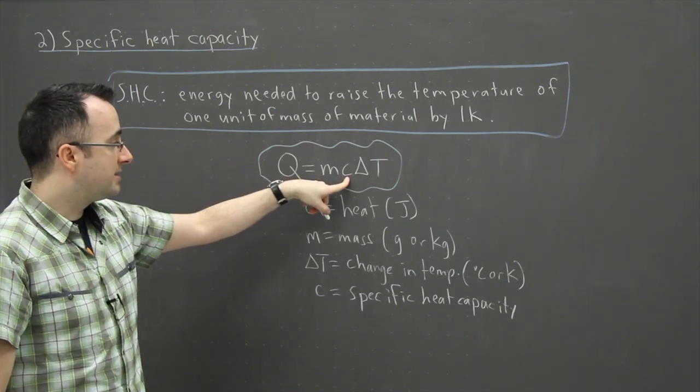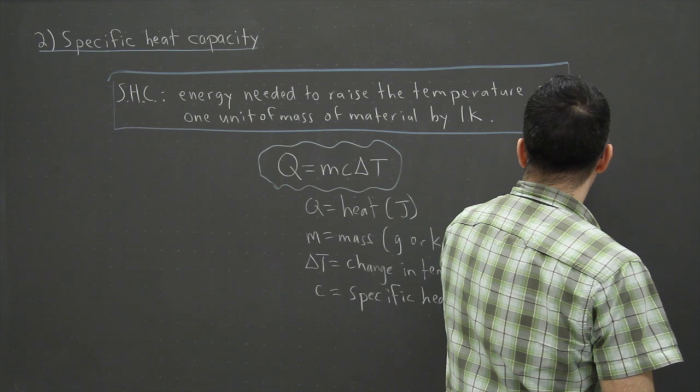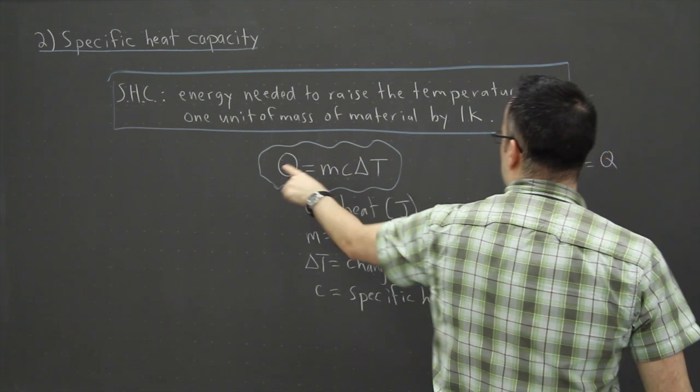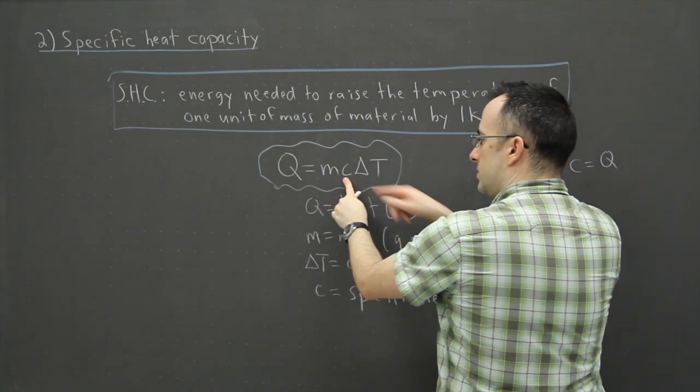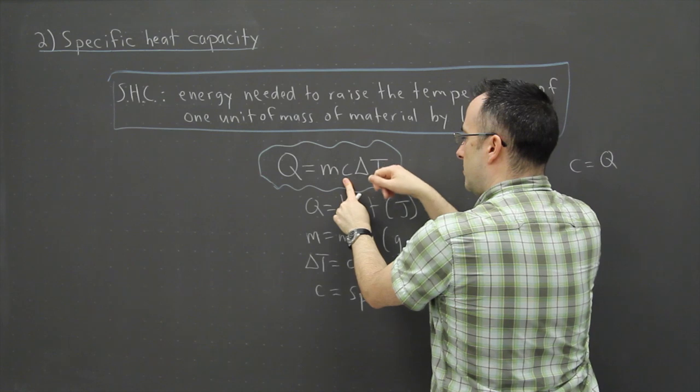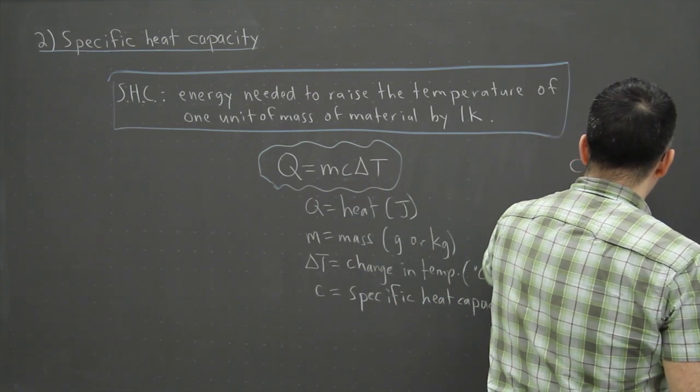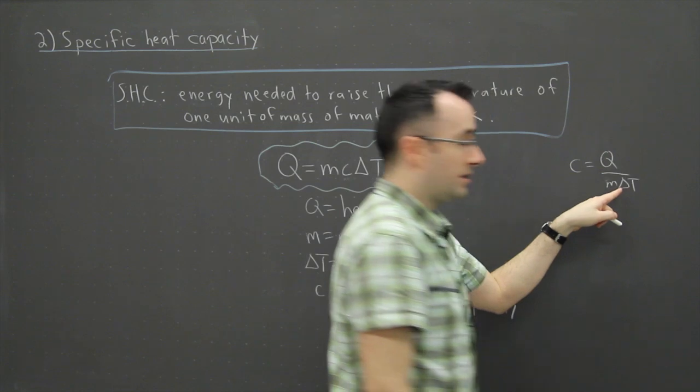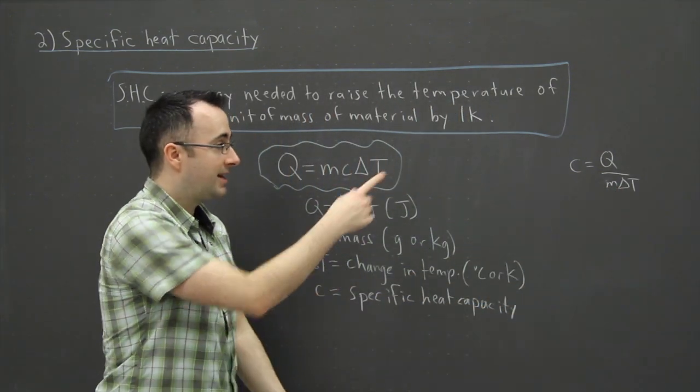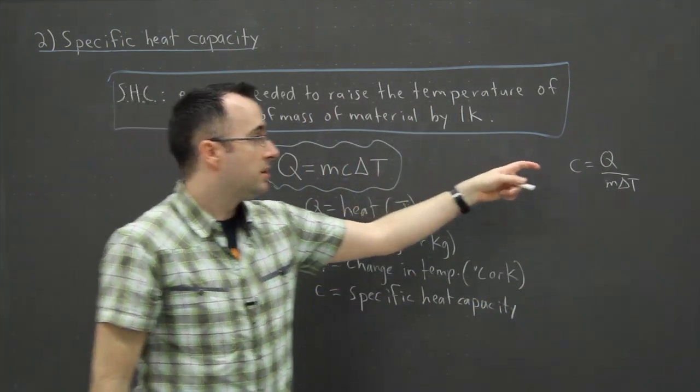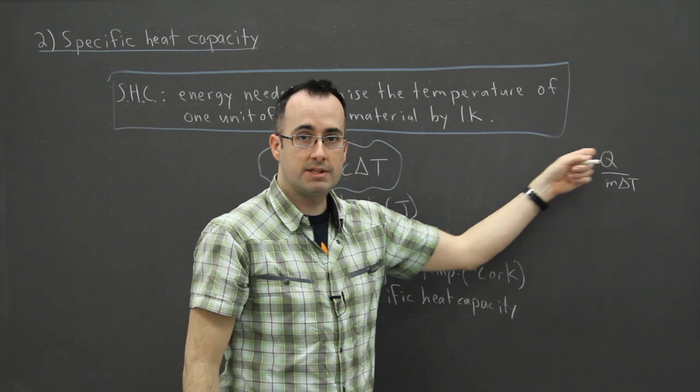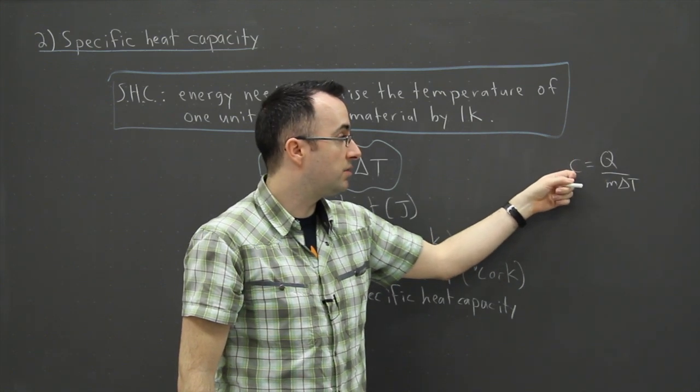If you want to isolate for C, I'm just going to do it off to the side here. C would be equal to—you'd have Q on the top still, and if you wanted C on its own you'd have to get rid of the m on the bottom and get rid of the delta T. In other words, it would be Q over m delta T. And if that's the case, then I can work out the units. So you just do the units for this. C, the specific heat capacity, will have units of—